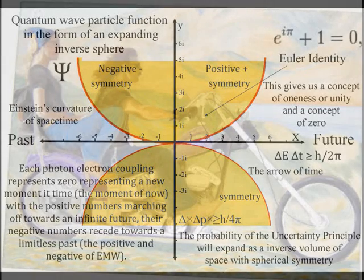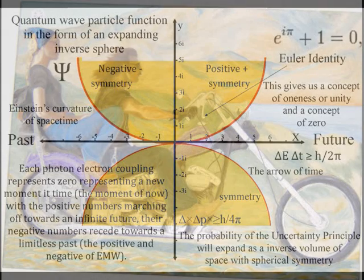Each photon-electron coupling represents zero, representing a new moment in time, the moment of now.